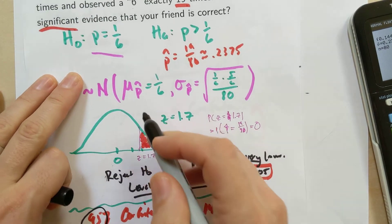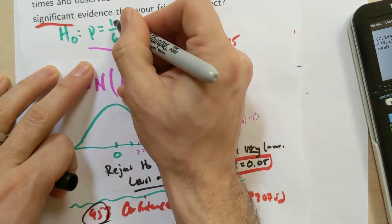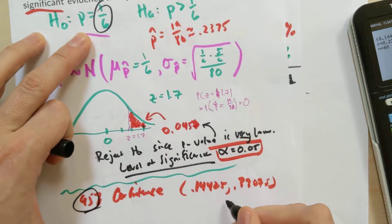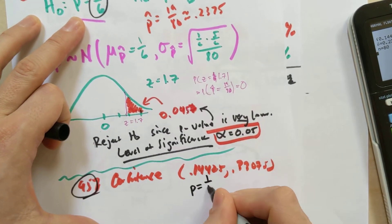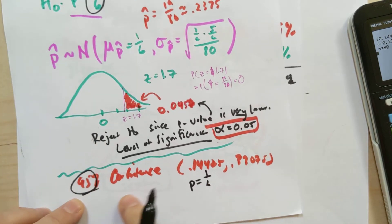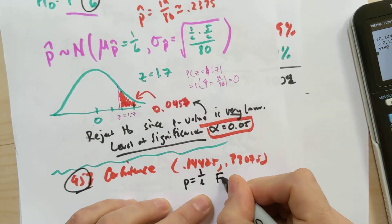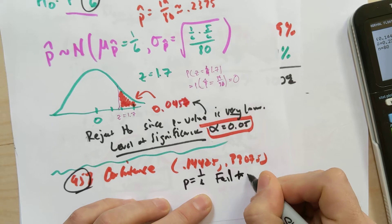And so when we use this confidence interval to evaluate the friend's claim, we said, does this confidence interval give us significant evidence to reject the middle hypothesis? And when we use the confidence interval with 95% confidence, we failed to reject because we saw one sixth, boom, is absolutely in this interval. P equals one sixth was here. And so our 95% confidence interval actually caused us to fail to reject.